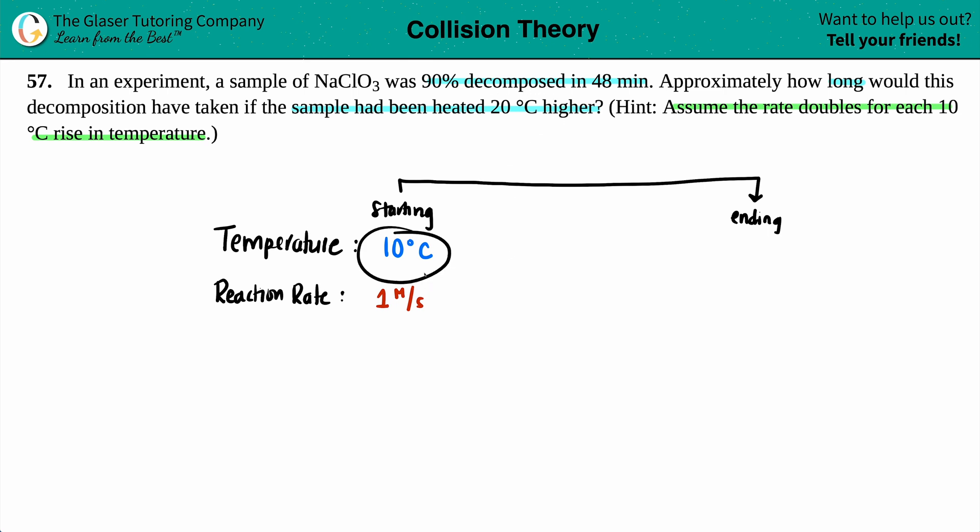So if I'm starting off at 10, I know that my ending degree has to be 30 degrees Celsius because that's the plus 20 degrees. But we have to abide by the rules of the reaction. It says that the rate doubles for every 10 degree rise in temperature. So how am I going to go from 10 to 30? I got to go by 10 degree increments.